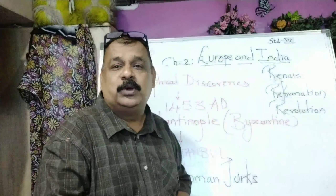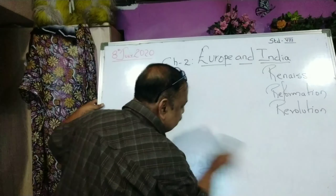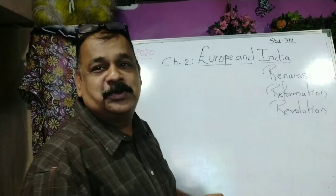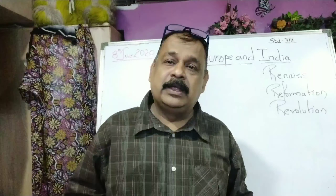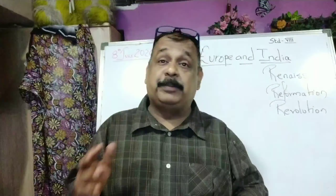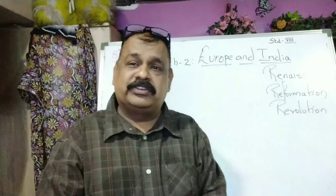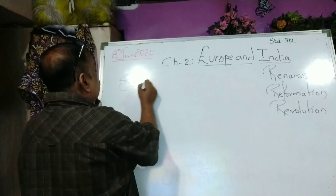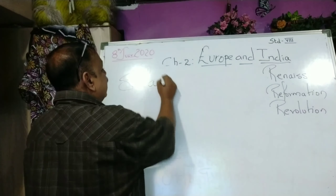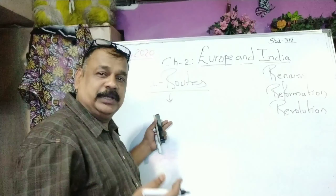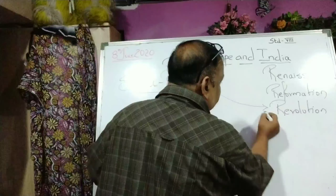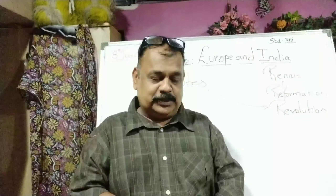It was this search for new routes that actually led to what is called Revolution. When they started searching for new routes, the land route was blocked. That was not the age when we had aeroplanes, missiles, or rockets. So they started searching for new sea routes. And when these sea routes were discovered, it led not just to people moving from their country to another, but rather this new sea route actually led to Revolution, which I am going to discuss about.